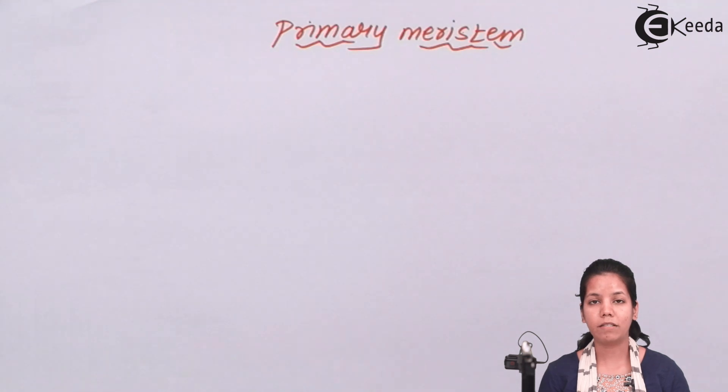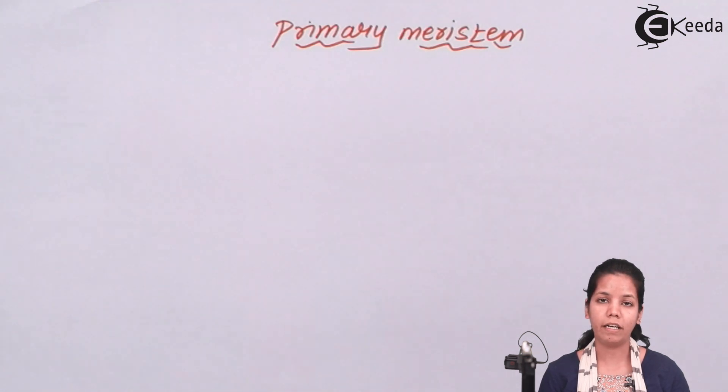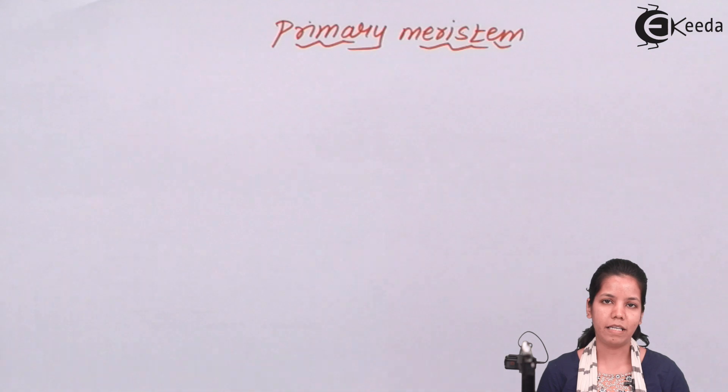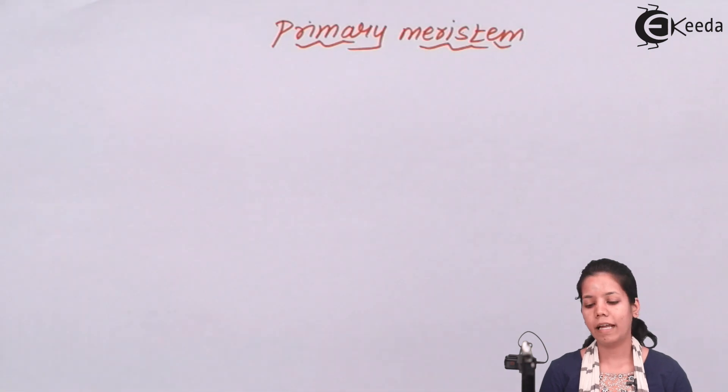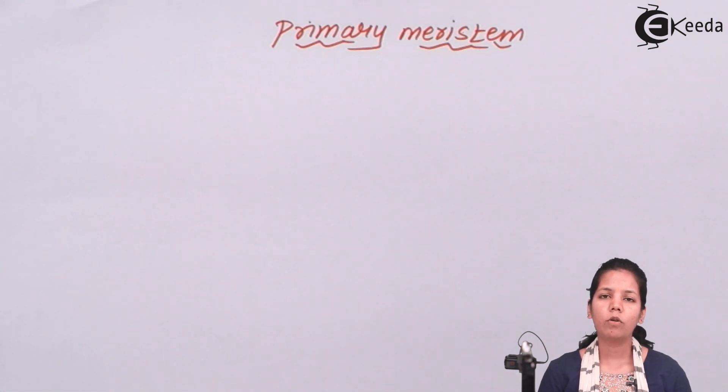Primary meristem is further classified into three types: apical meristem, lateral meristem, and intercalary meristem.